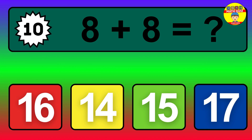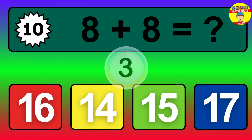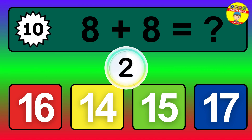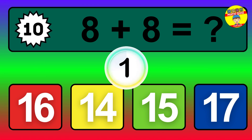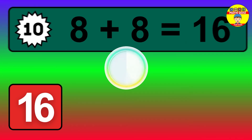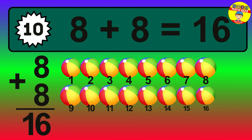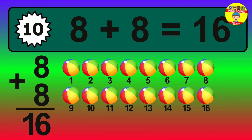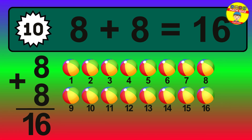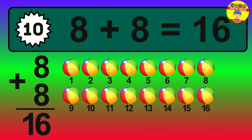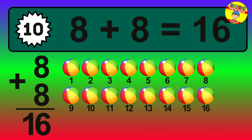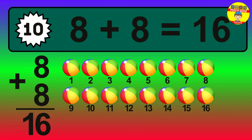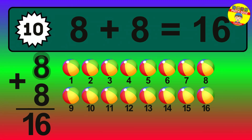Question 10. 8 plus 8 equals what? The answer is 8 plus 8 is 16. Let's count it: 1, 2, 3, 4, 5, 6, 7, 8, 9, 10, 11, 12, 13, 14, 15, 16.